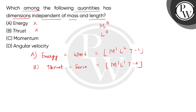Now the third option is momentum. We express momentum by the product of mass and velocity, so it will be dimensional formula M1, L1, T minus 1.